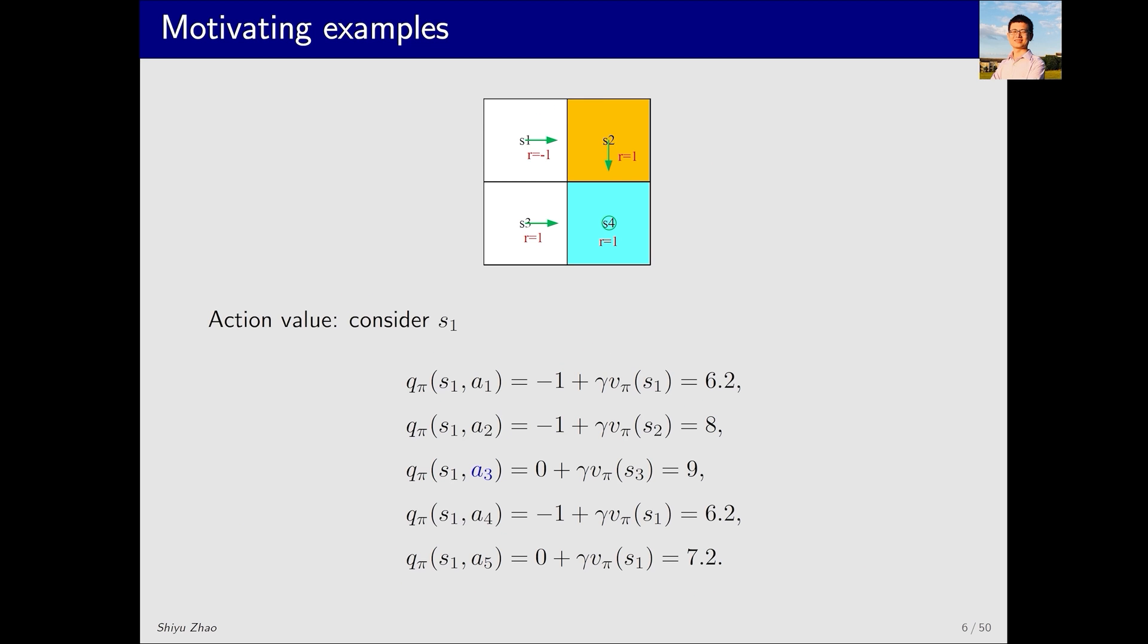After determining the state value, we can proceed to solve for the action value. How do we do this? Let's consider s1 as an example. There are five actions. Each action is associated with a value. For instance, let's examine action a3.